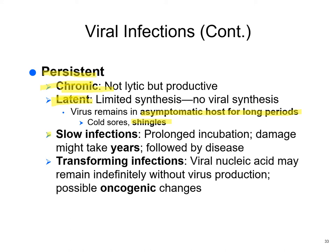Slow infections: you get a virus, it hangs out for years and years, then is followed by disease. Multiple sclerosis was long discussed as potentially being a slow virus, though no virus causing MS has ever been identified. Transforming infections: the viral nucleic acid persists without causing virus production but can cause cancer — oncogenic changes. We know viruses cause some cancers, like feline leukemia virus and bovine leukemia virus, though these are species-specific. You cannot catch leukemia from your cat.